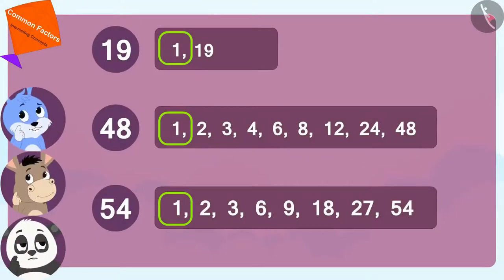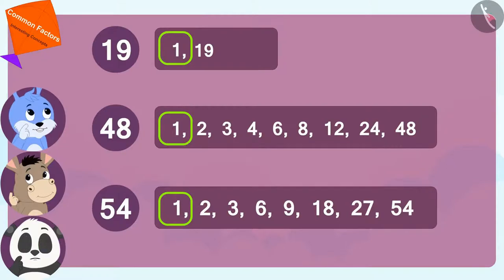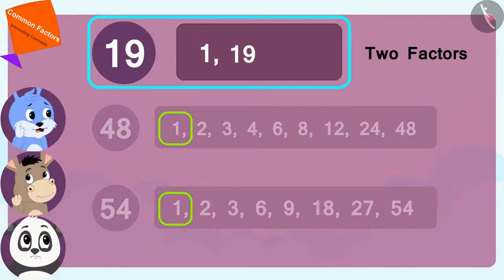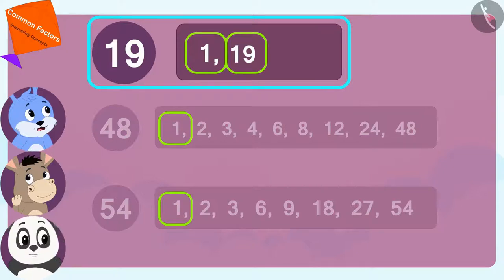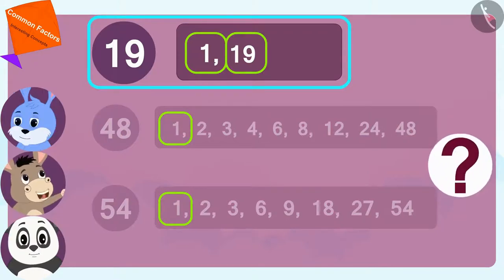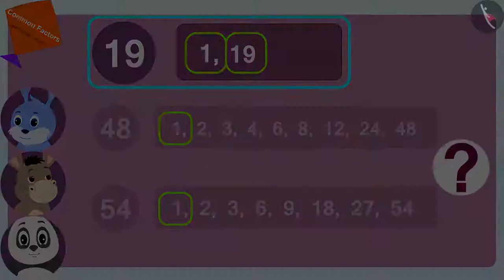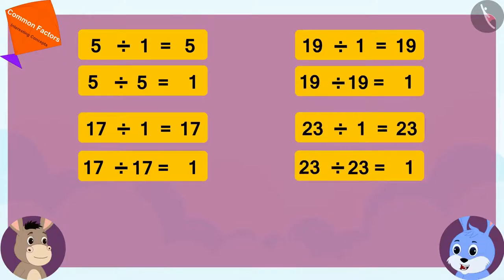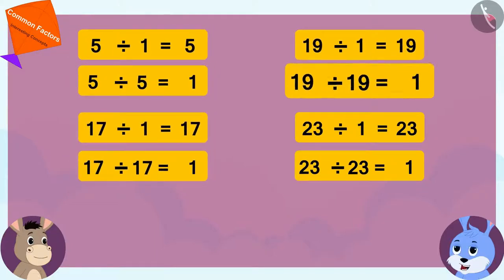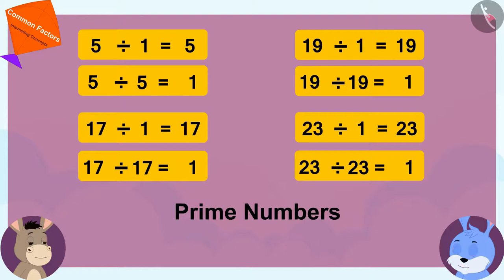Now, all three friends are thinking that they cannot give all those things to only one child. And 19 has only two factors — one and 19 itself. So those numbers and shared factors are not possible. But why does 19 have only two factors? Bola asked Bunny. There are many numbers like 19 which we can only divide by one and that number itself — we call such numbers prime numbers. And because these numbers can only be divided by one and that number itself, they have only two factors. Bunny explained to Bola.